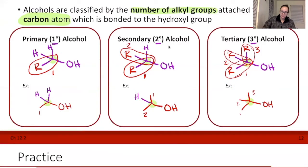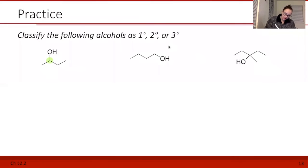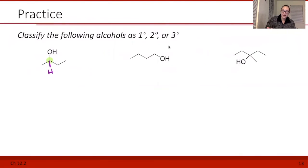Let's practice — classify the following alcohols as primary, secondary, or tertiary. Take a moment and try on your own. For this first one, I'm going to look at the carbon attached to my alcohol — I highlighted it — and draw in the other hydrogens. This carbon has three bonds shown, which implies there is one more hydrogen. Counting the carbons attached: we have one here, two here, and that's it. So this is a secondary alcohol.